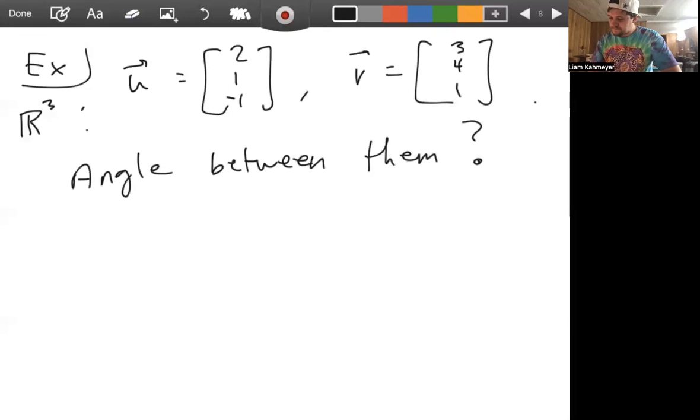Well, we know the dot product is related to the angle between them, so we can use this formula: U dot V equals magnitude of U times magnitude of V times cosine theta. We can solve for cosine theta, and if you want to be super explicit, we can solve for theta. We would get that cosine theta equals U dot V over magnitude of U times magnitude of V.